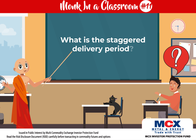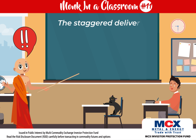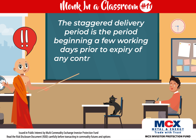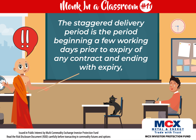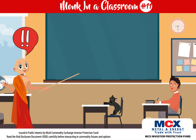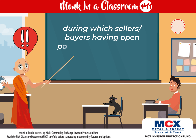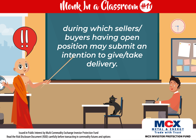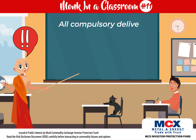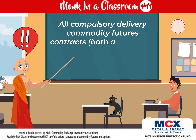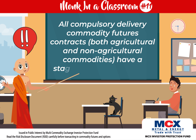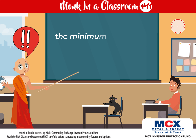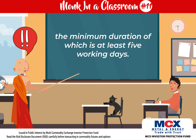What is the staggered delivery period? The staggered delivery period is the period beginning a few working days prior to the expiry of any contract and ending with expiry, during which sellers or buyers having open positions or intention may submit an intention to give or take delivery. All compulsory delivery commodity futures contracts, both agricultural and non-agricultural commodities, have a staggered delivery period, the minimum duration of which is at least five working days.